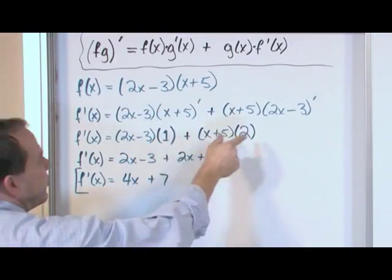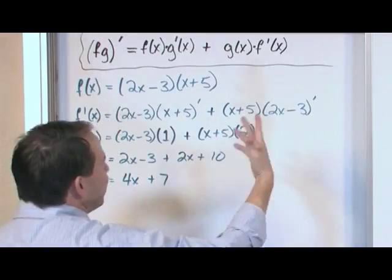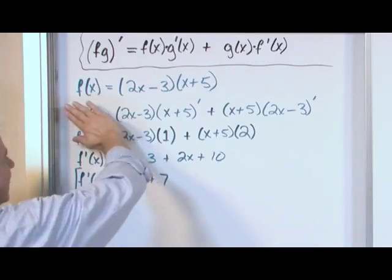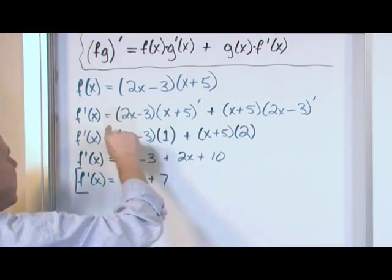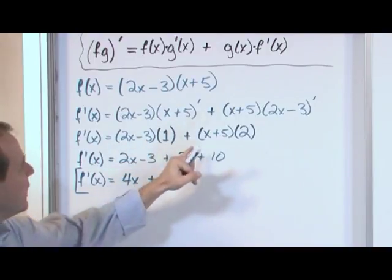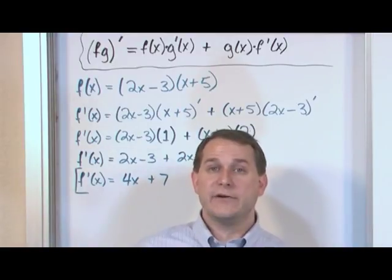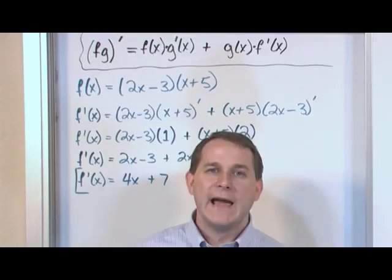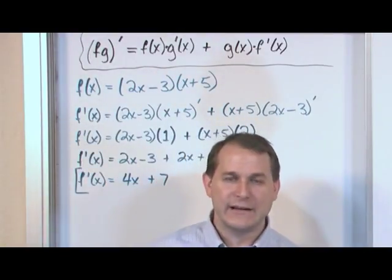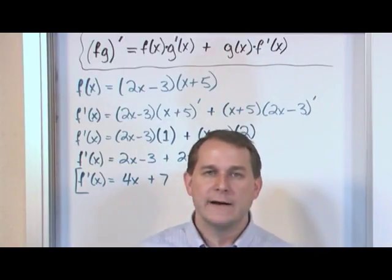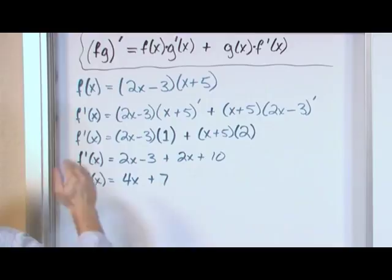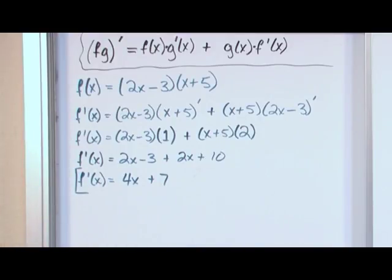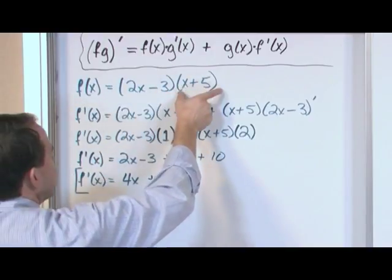Notice that the derivative of (x + 5) is just 1 and the derivative of (2x − 3) is just 2. If you skip that intermediate step and take the derivative in your head, it doesn't show what you were doing. Eventually you will make a mistake, and when you're taking a test without intermediate steps shown, the grader won't know if you understood the process. My advice in the beginning is to show all of the work — it's never going to hurt you and it's always going to help you.